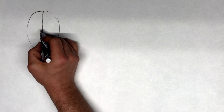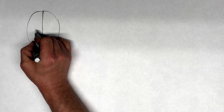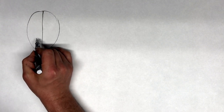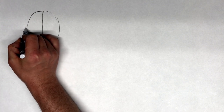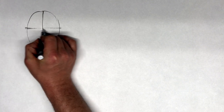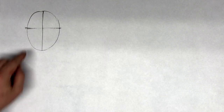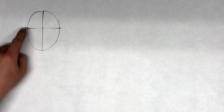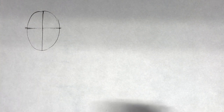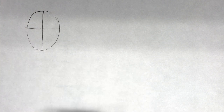Step three: find your eye level. On most people, eye level will run at about the middle of the features. Now I accidentally placed it a little bit higher — that's okay, on most people it does run a little bit higher. So step one, draw an oval. Step two, find the centerline. Step three, find eye level.